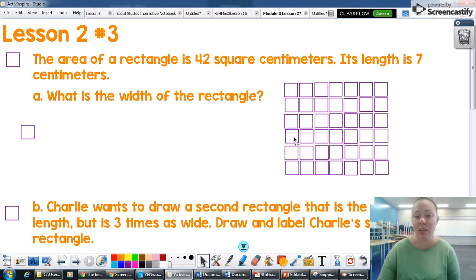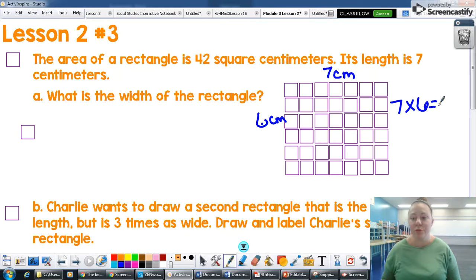One, two, three, four, five, six. So I am going to label my array as seven, and the unit is centimeter. So I'm going to use that unit centimeters. And it was six tiles down, so I'm going to label that as six centimeters. And I know that because seven times six equals 42, because this is just like an array.